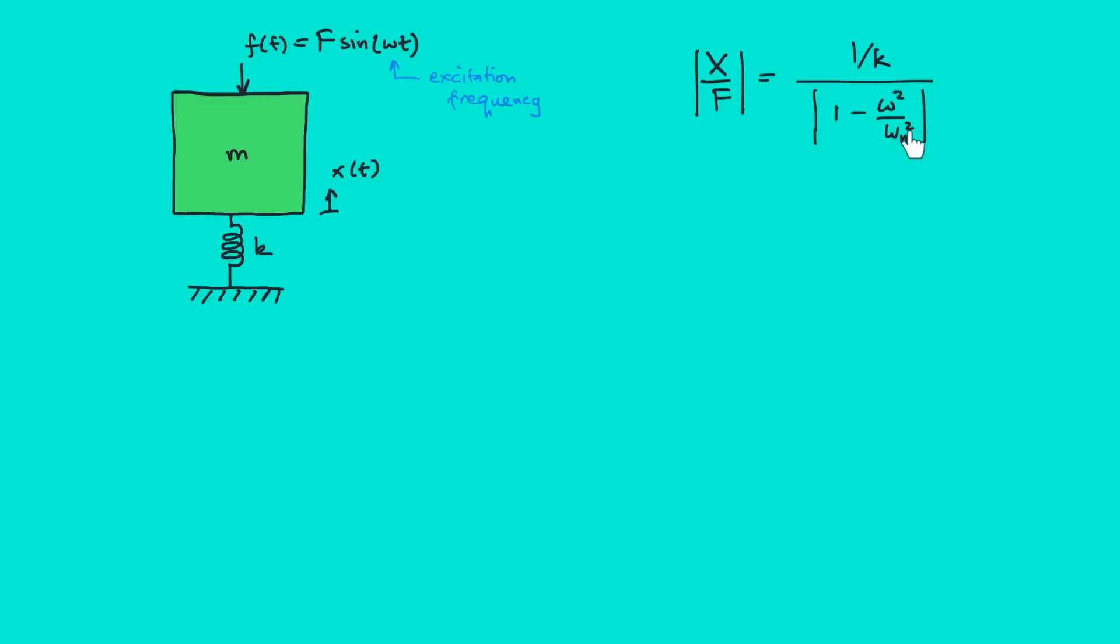Meanwhile ωₙ is the property of the vibrating system which is basically the ratio between the stiffness and the mass. What we want to emphasize is that it is possible that the driving frequency can be the same as the natural frequency.